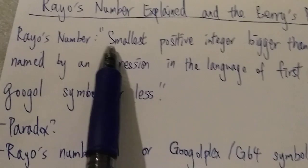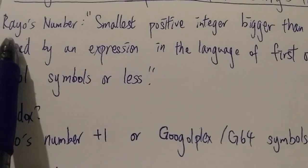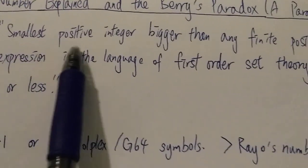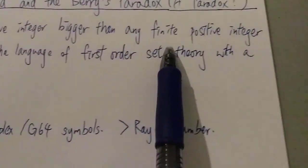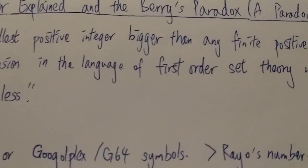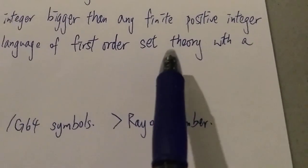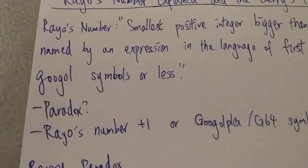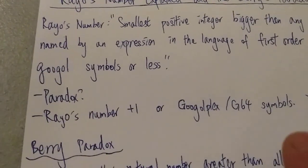So again, first let's look at the English definition of Rayo's number, which is the smallest positive integer bigger than any finite positive integer named by an expression in the language of first-order set theory with a googol symbols or less. So is this a paradox?